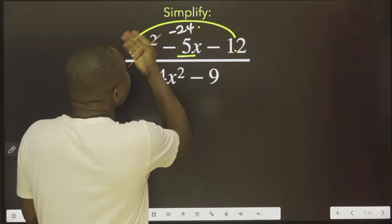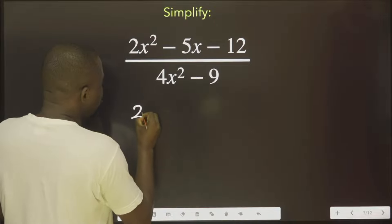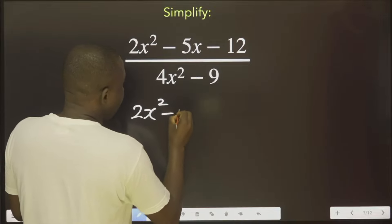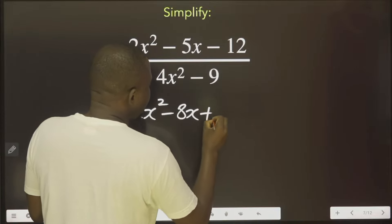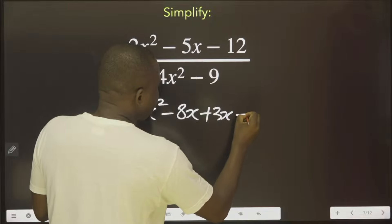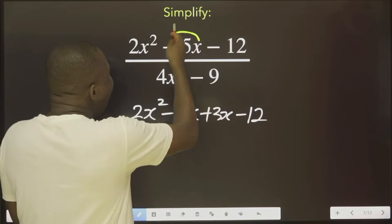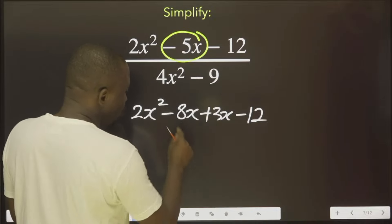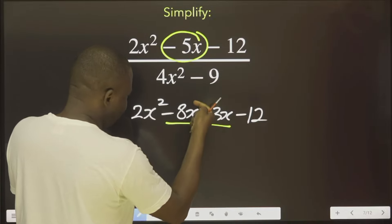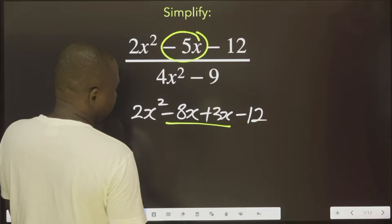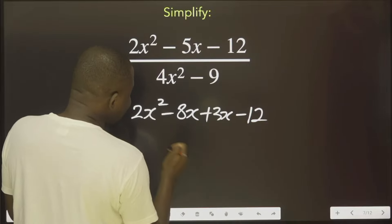We are coming back to this place now to say 2x minus 8x plus 3x minus 12. We are replacing this with these two. Minus 8x plus 3x. So, with this now,